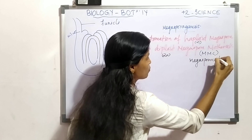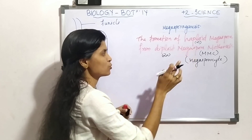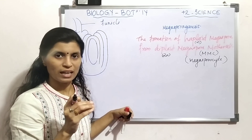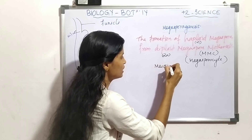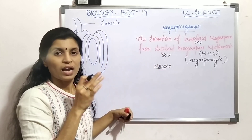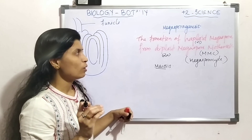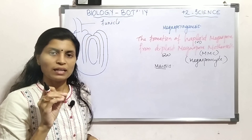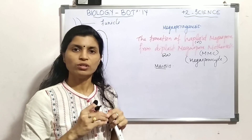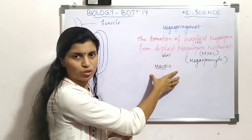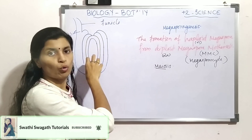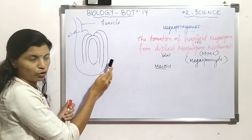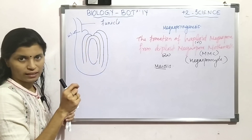The megasporocyte, or megaspore mother cell, undergoes meiosis. That process is called Megasporogenesis — once again, the formation of haploid megaspore from diploid megaspore mother cell by meiosis is called Megasporogenesis. This process takes place inside the ovule.